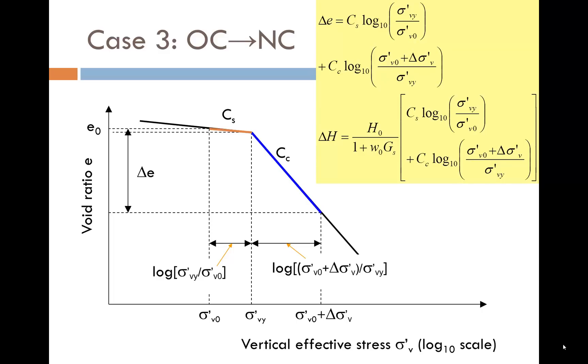The third case leads to the longest expression of the three. It is two parts as the soil starts over-consolidated but becomes normally consolidated after the load is applied. In other words, the initial and final vertical effective stresses straddle the pre-consolidation pressure. So both the Cs and the Cc slopes are used.